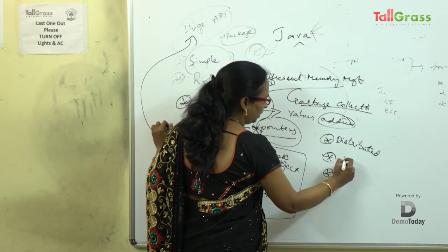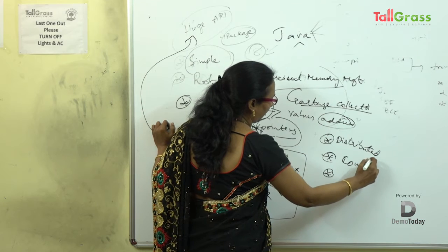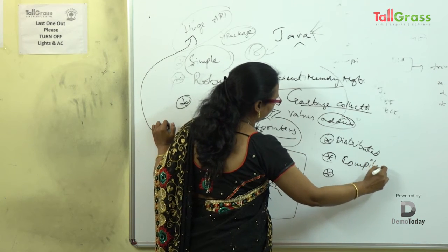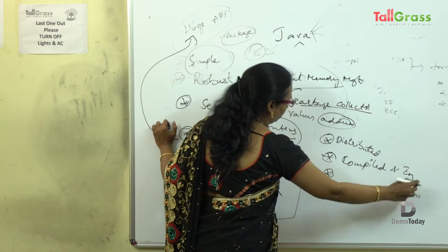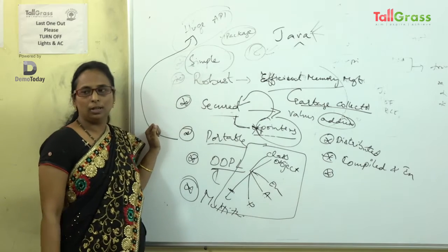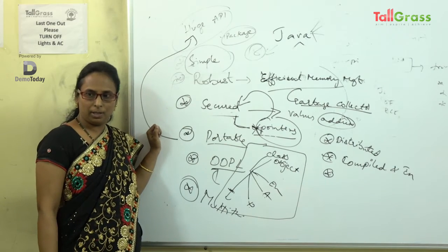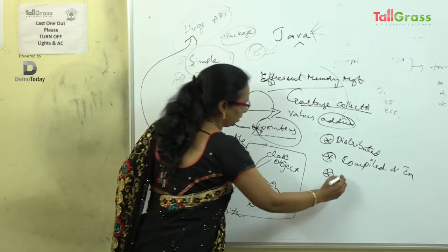The next feature is that Java is both compiled and interpreted — it is both a compiled and interpreted programming language.